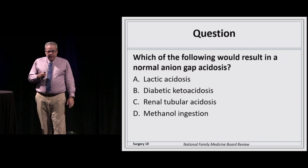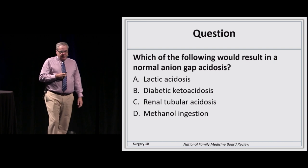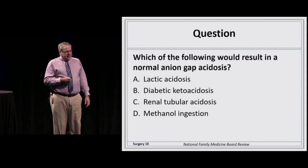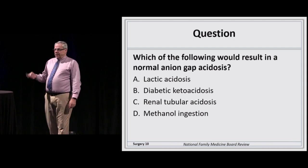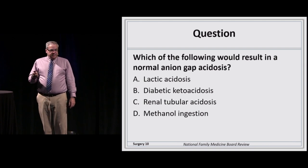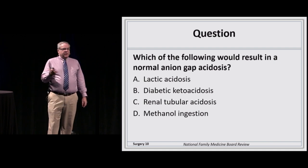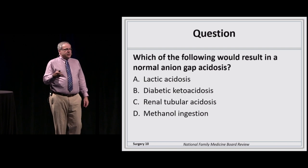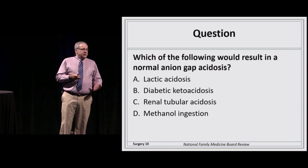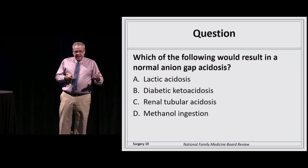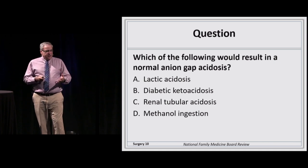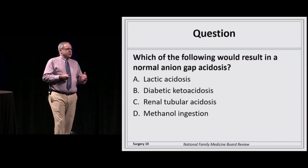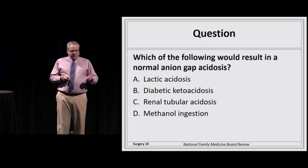Which of the following would result in a normal anion gap acidosis? Lactic acidosis, diabetic ketoacidosis, renal tubular acidosis, or methanol ingestion? Lactic acidosis and diabetic ketoacidosis are related — both involve organic acids — and methanol ingestion results in the same sort of process. So the answer is C: renal tubular acidosis.